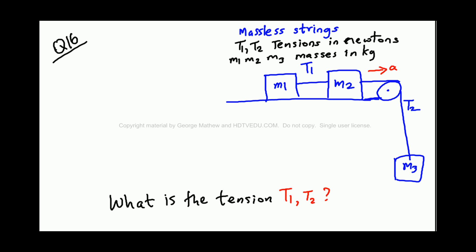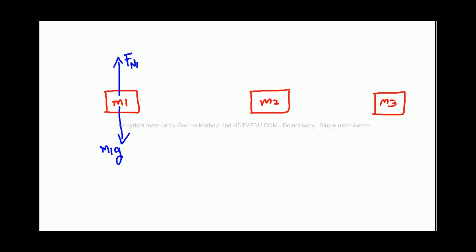So T1, the direction of tension T1 is to the left. It is always a pulling force. So it is to the right. So let's put that in black. Tension T1.